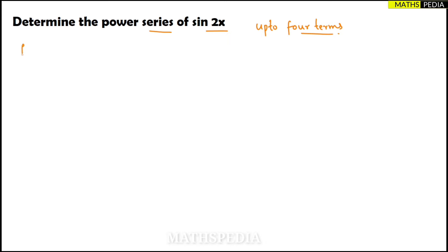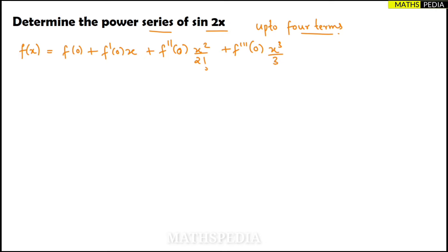First, let me write the Maclaurin series: f(x) = f(0) + f'(0)·x + f''(0)·x²/2! + f'''(0)·x³/3! + f''''(0)·x⁴/4! and so on. We need to find only four terms — that means the first, second, third, and fourth terms — so we need to find up to the third derivative.